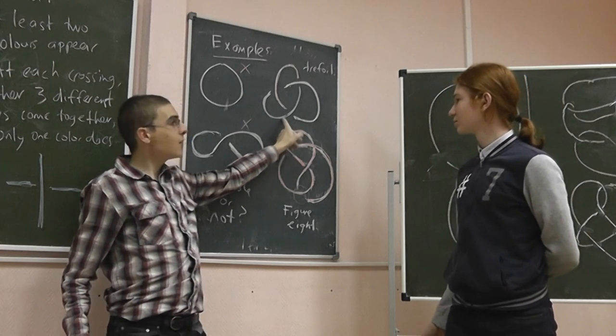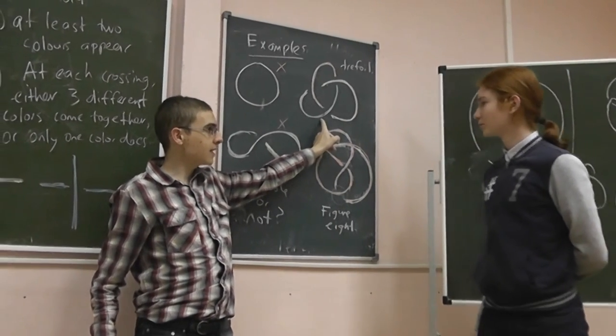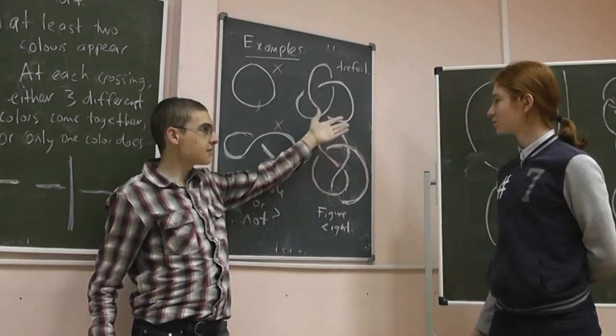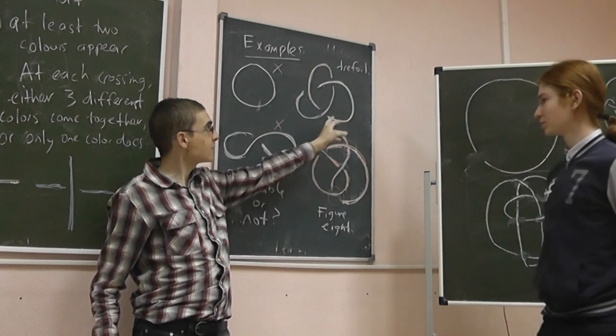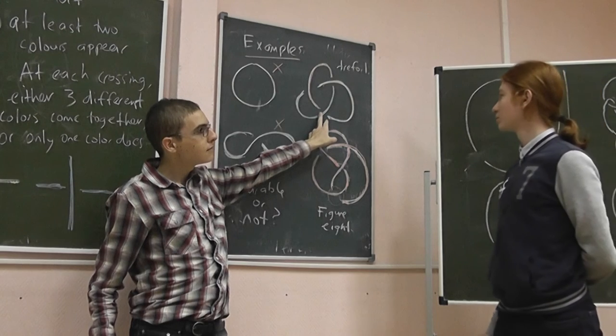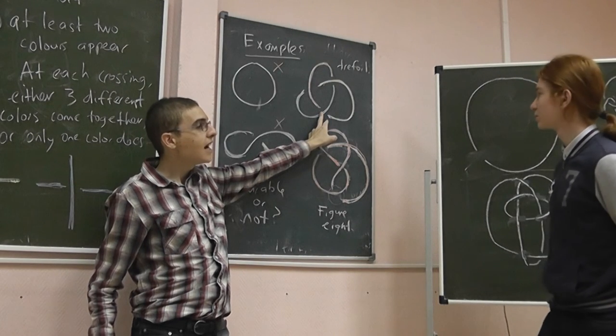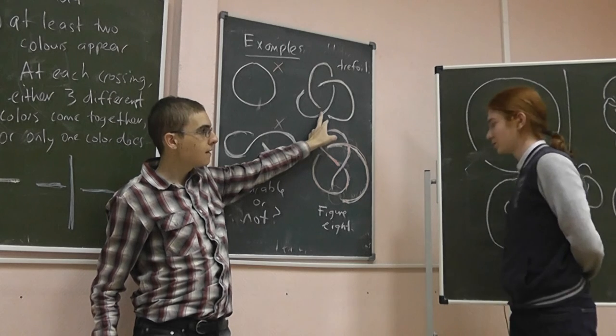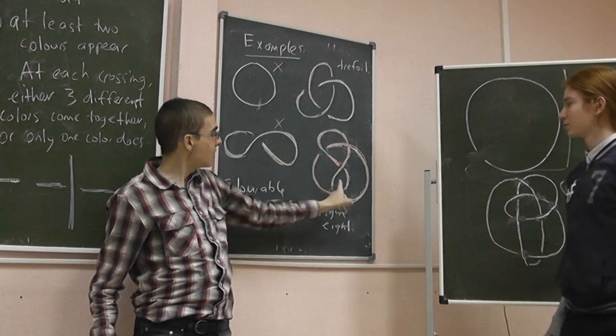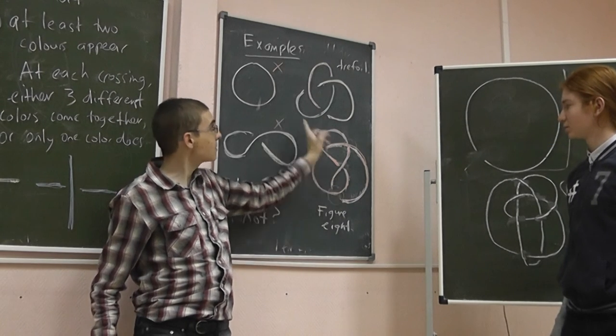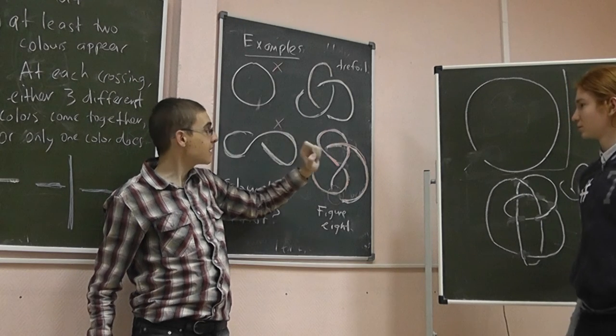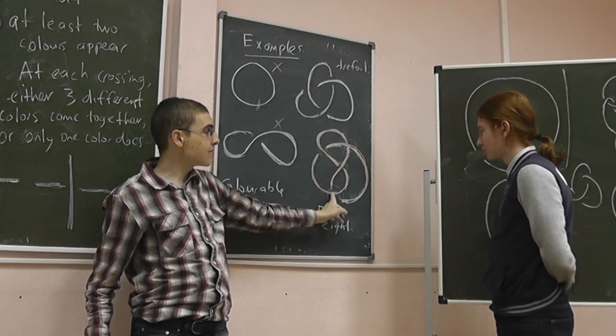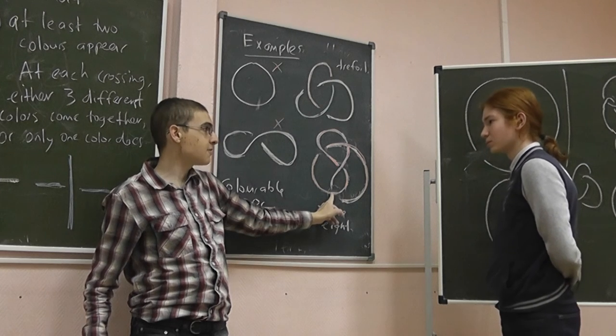But what if you have a trefoil and you have another knot that is also colourable, and you want to decide if they're different, you might be able to decide if this has how many colourings? Six. It has six colourings, and if a different knot had a different number of colourings, then that would decide as well. And the other, but now, how can you decide that that's not the same as that? There is a way in terms of, there might be a way in terms of colourings, where instead of looking at three colours, you look at a different number of colours.